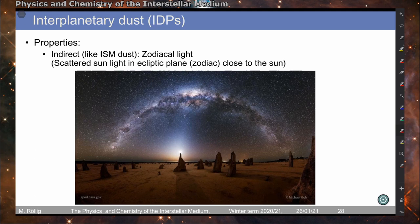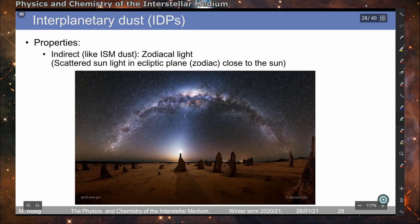The only access we have so far to astronomical dust particles is from interplanetary space or from the solar system. We do not have access to interstellar dust, because this can only be found outside of the solar system. We know there is dust in the solar system from indirect observations — one example is the so-called zodiacal light, which is scattered sunlight scattered by dust in the ecliptic plane, also called the zodiac, close to the sun, as shown here.